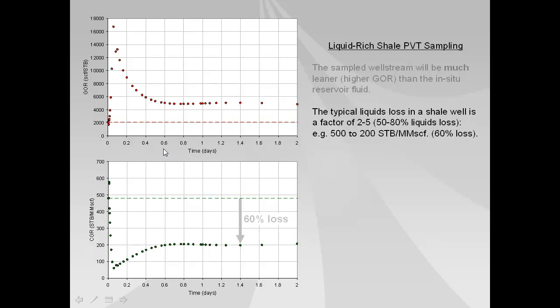And in this particular simulation we actually have an in-situ fluid with 500 barrels per million CGR and when we produce the well after only a few hours we reach this flat constant CGR behavior at about 200 barrels per million representing about a 60 percent loss in liquids just because of the two phase flow in this very tight rock.